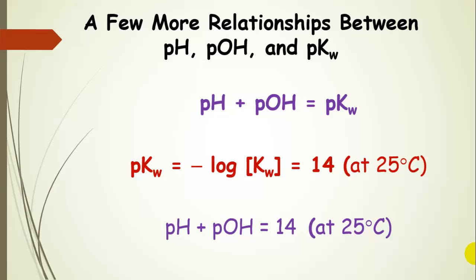Here are a few more relationships. Over the course of this chapter, you'll use these to interconvert between pOH and pH. When you add pH and pOH together, you get pKW. So for pure water at 25 degrees C, pH plus pOH equals 14.